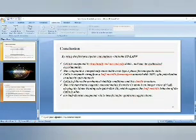By using the first principle calculation within the FP-LAPW method, CrCAIS compound is structurally and mechanically stable and can be synthesized experimentally. The compound is energetically more stable in its type III phase ferromagnetic state. CrCAIS responds strongly as a half-metallic ferromagnetic material with 100% spin polarization in minority spin channels.